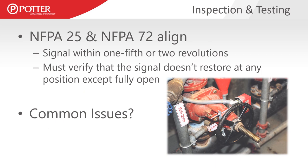NFPA 25 and 72 align in terms of what constitutes a pass-fail for a supervisory switch test. It's a signal sent within one fifth of a turn or two revolutions of the wheel. It must verify that the signal doesn't restore at any position except fully open — meaning you must run the stem all the way in and out to make sure that trip stem doesn't fall into the threaded grooves and restore itself at any position other than fully open. Common issues are often misalignment or misapplication — they don't get installed properly or get bumped and banged.